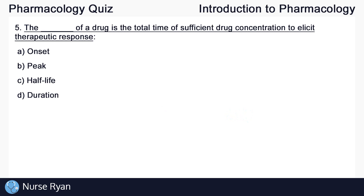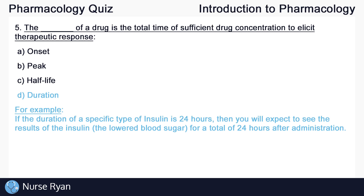Question number five: The blank of a drug is the total time of sufficient drug concentration to elicit therapeutic response. The answer here is D — duration. The key is the total time of sufficient drug concentration. For example, if the duration of a specific type of insulin is 24 hours, then you will expect to see the results of the insulin — the lowered blood sugar — for a total of 24 hours after administration.